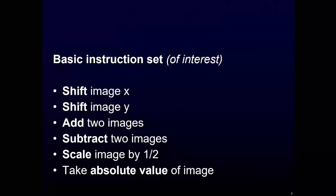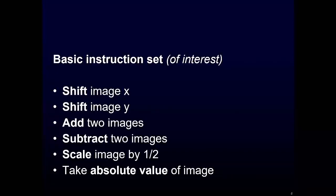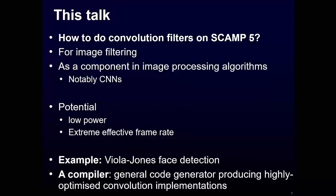The instruction set is very basic. We can shift images in the x-direction by taking values from neighboring processors, do the same in the y-direction, add images together, subtract images from each other, and scale images by one half by sending the current into two registers simultaneously. What we set out to do is build essentially a compiler that can generate code to run convolutional image filters directly on this device.